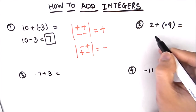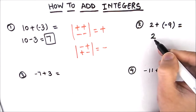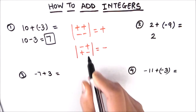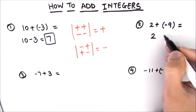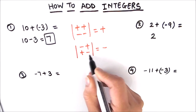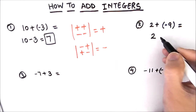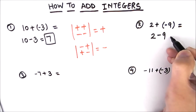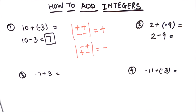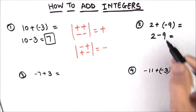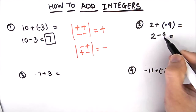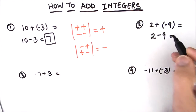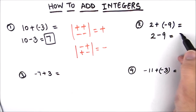We'll write the first number, 2. A positive and a negative is there, so we'll change the sign to negative, because positive and negative gives us negative. So that's 2 minus 9. Here we see that 2 minus 9 is the same as 9 minus 2, which is 7.